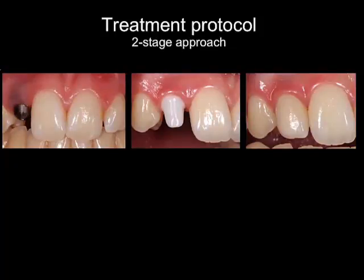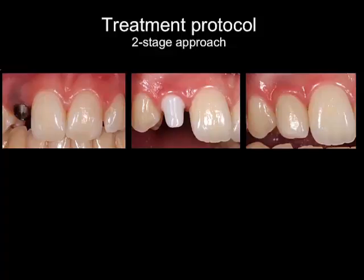Let me go very quickly into an older case where we did the exact same protocol — where we manufactured a zirconia abutment — and as you can see here, the situation after insertion of the definitive crown: everything looks pretty nice, tissue integration has been achieved, we have adequate interdental papilla fill.